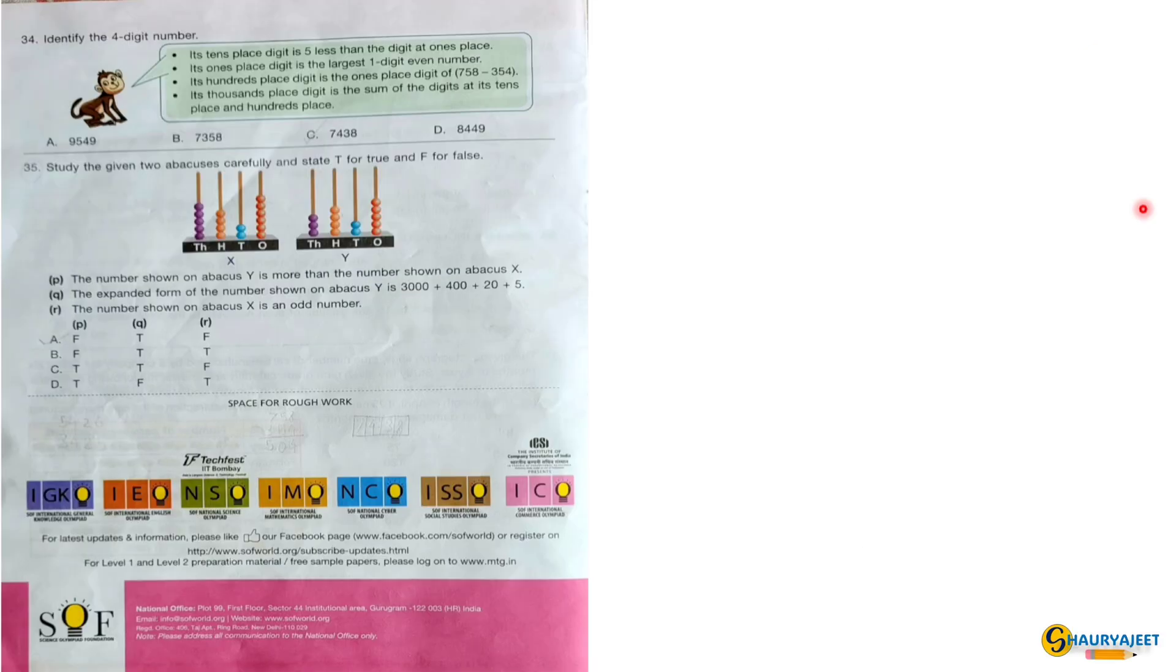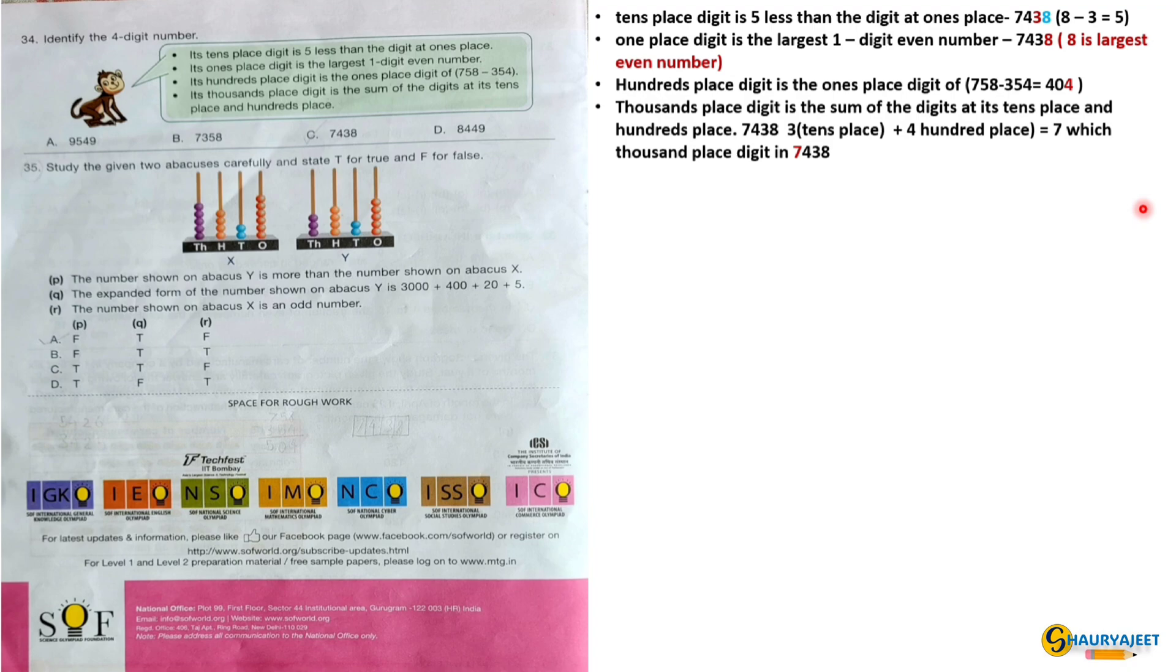Question 34: Identify the 4-digit number. Its tens place digit is 5 less than the digit at ones place. Its ones place digit is the largest 1-digit even number. Its hundreds place digit is ones place digit of 758 minus 354. Its thousands place digit is the sum of the digits at its tens place and hundreds place. For all this condition, number 7438 is matching. So correct option is option C.